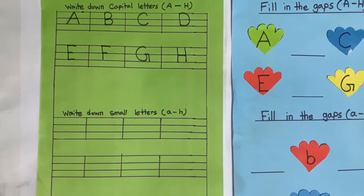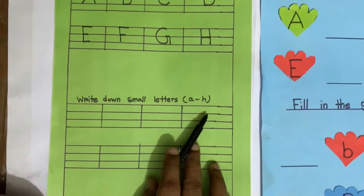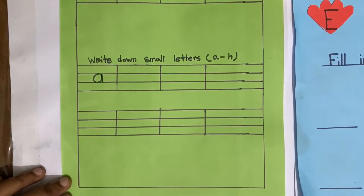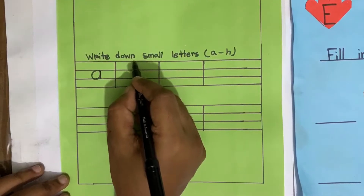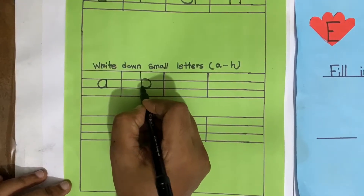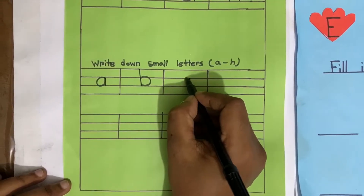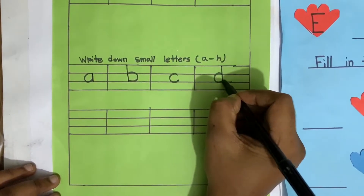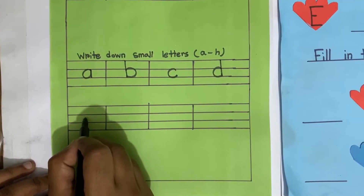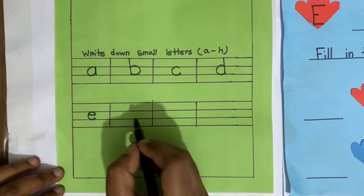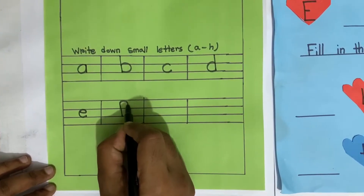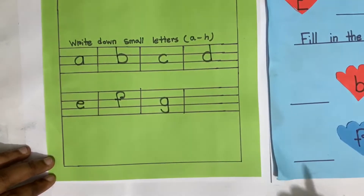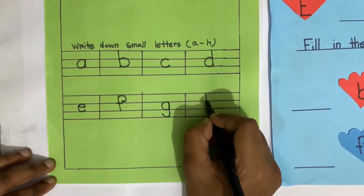Now I will write down small letters A to H. What is it? A. And after A? B. After B? C. After C? D. And after D? E. Good. And after E? F. After F? G. And the last one? H.